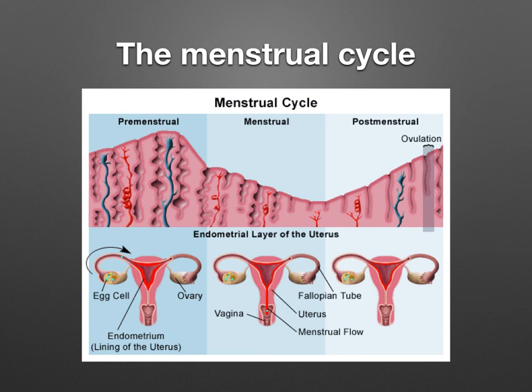Looking at this diagram, you can see the endometrium. Notice how it thickens, and then during menstruation the lining comes away and is lost through the vagina. Then the endometrium starts to thicken again.